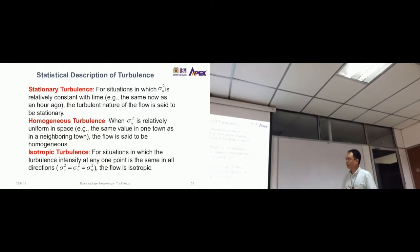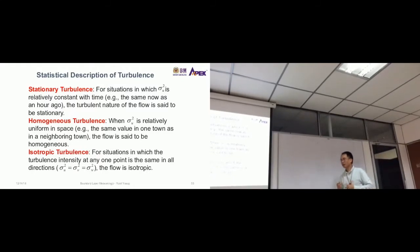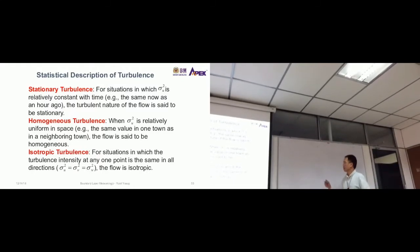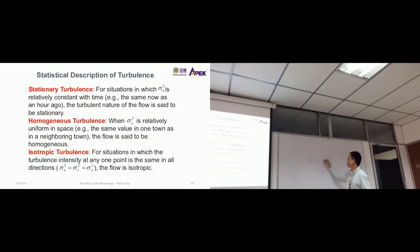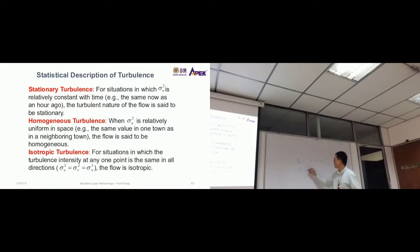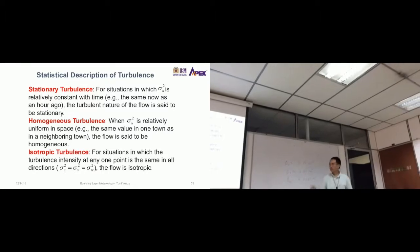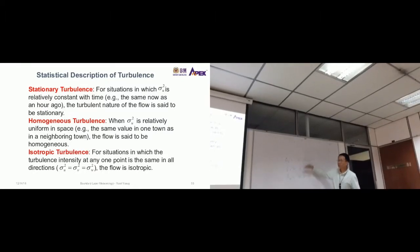You can guess from the word here, iso means same, tropic direction, isotropic turbulence. Now, from my experience, sigma u is usually higher. Sigma u may be about 0.15. Sigma v, usually very small, 0.01 meter per second. Sigma w is about 0.0001 meter per second. You see that the order of magnitude is quite large between the three.